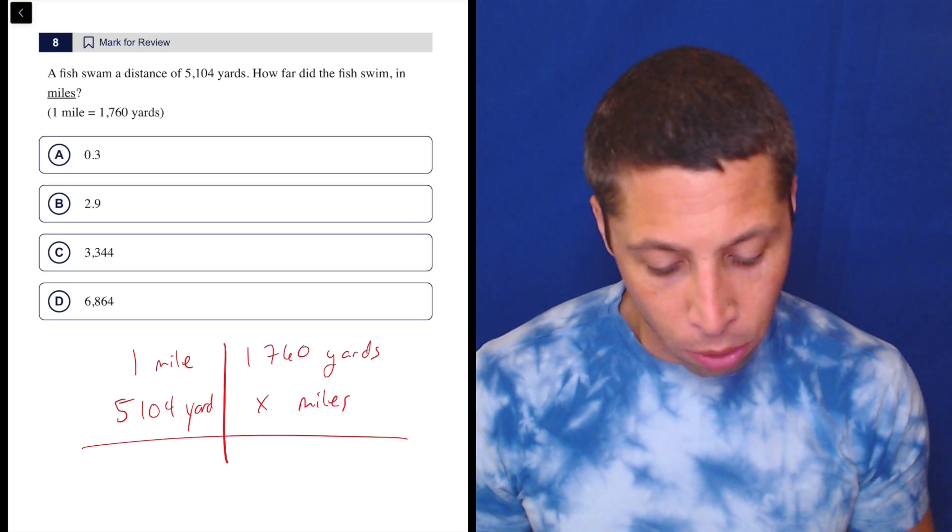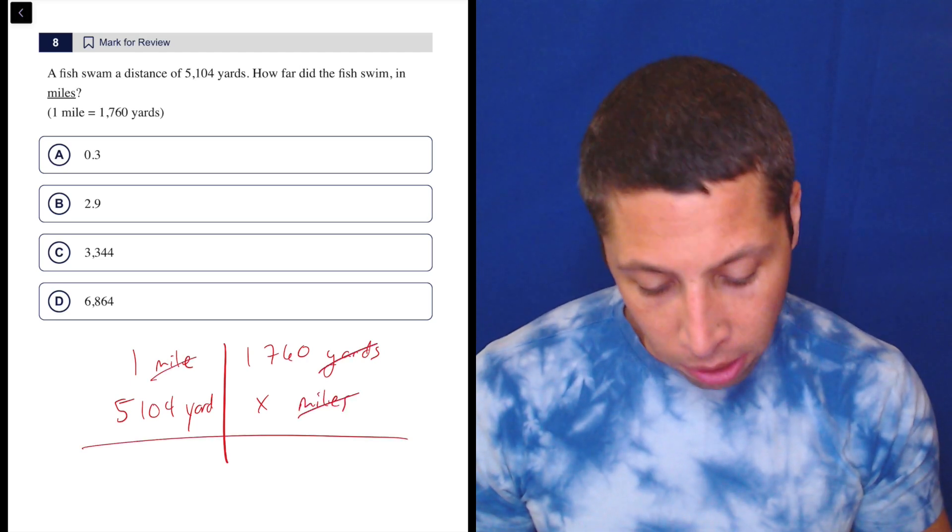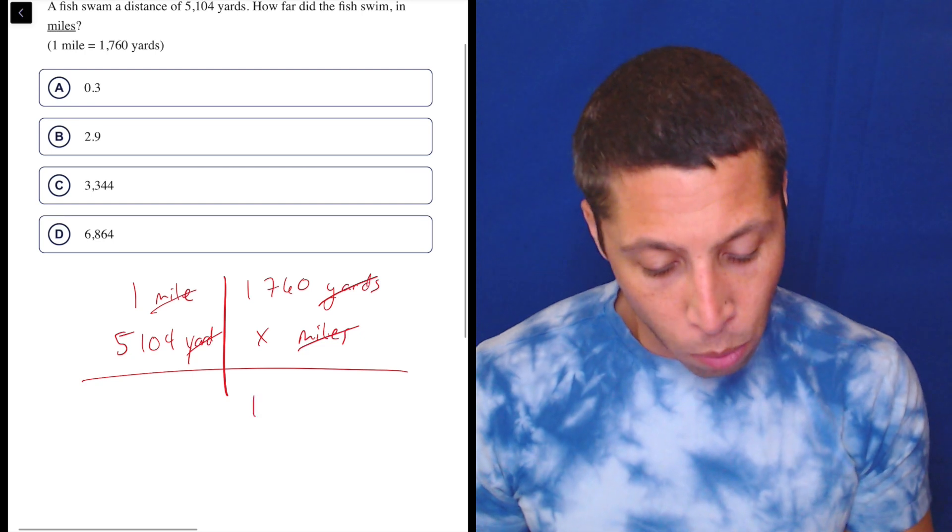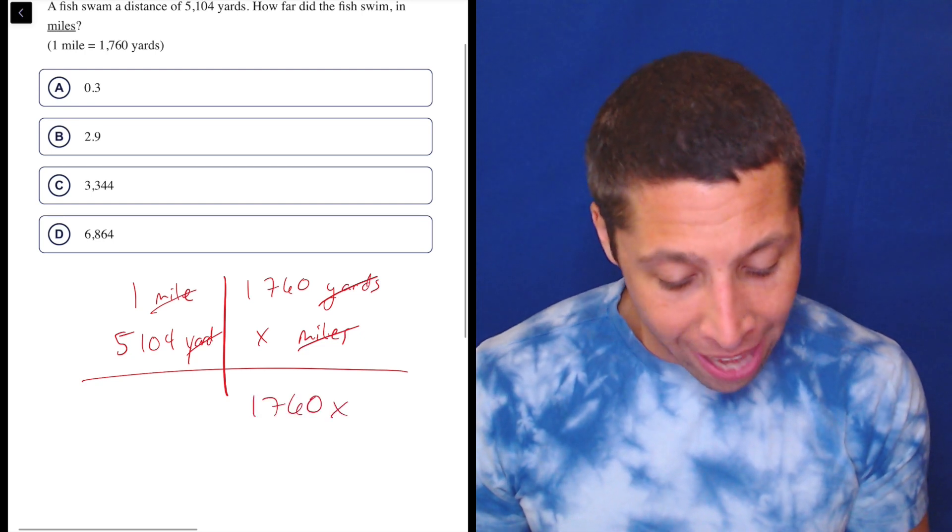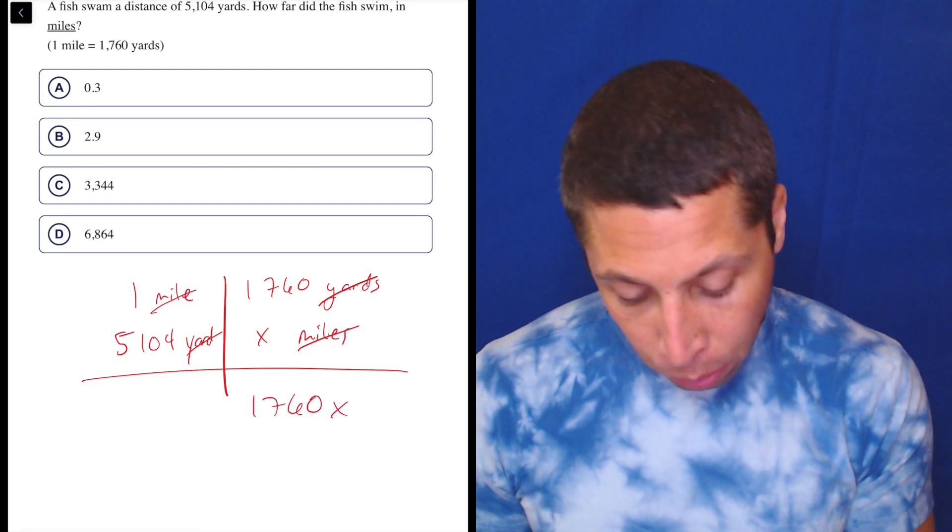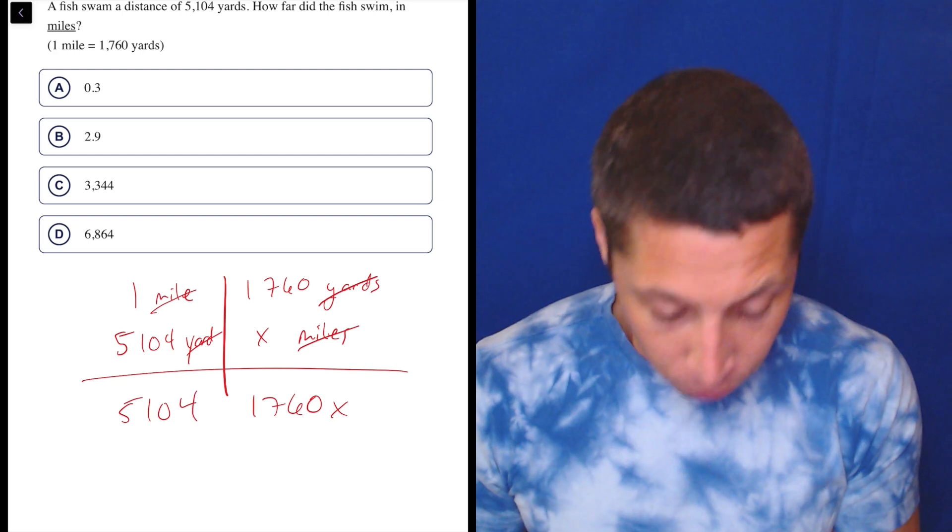It's only one conversion, but it still works. Miles, miles, yards, yards. So 1,760X, we're multiplying, is equal to 5,104.